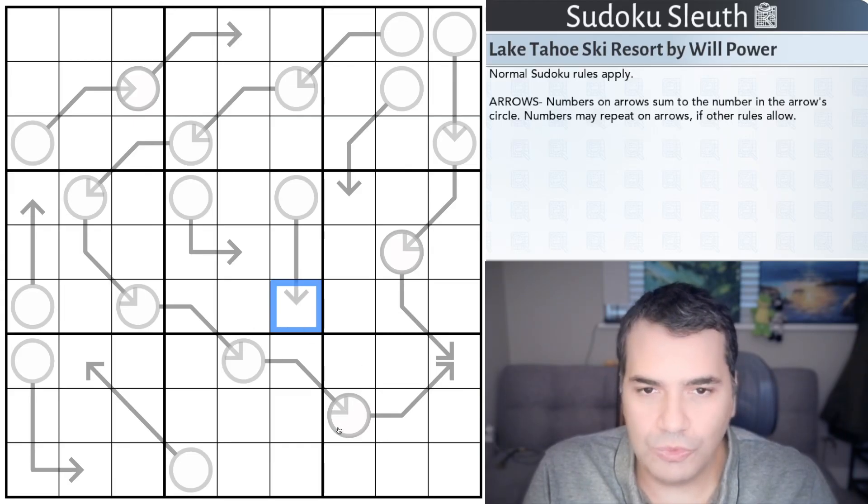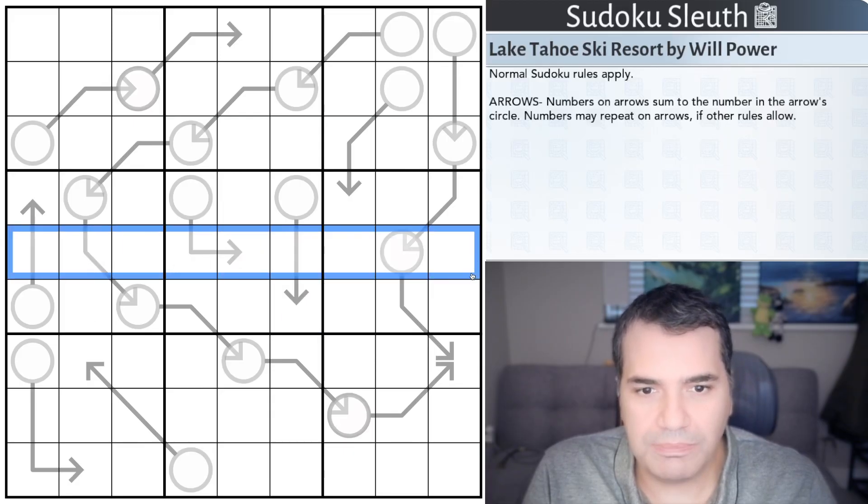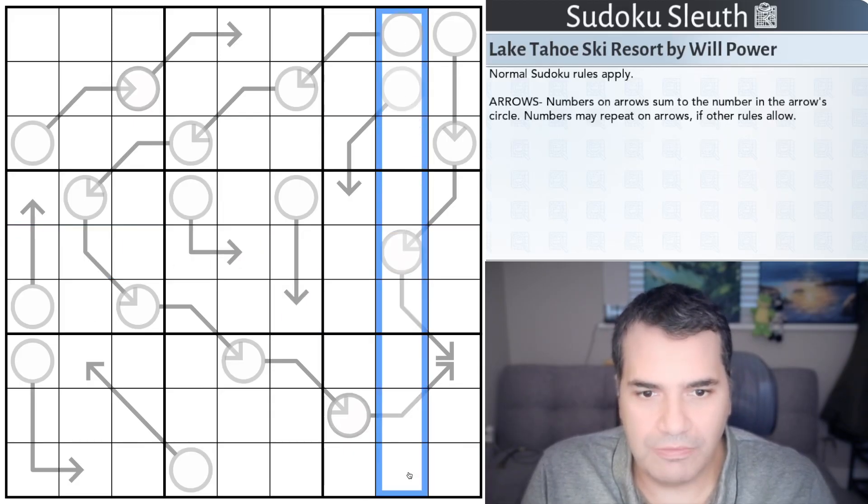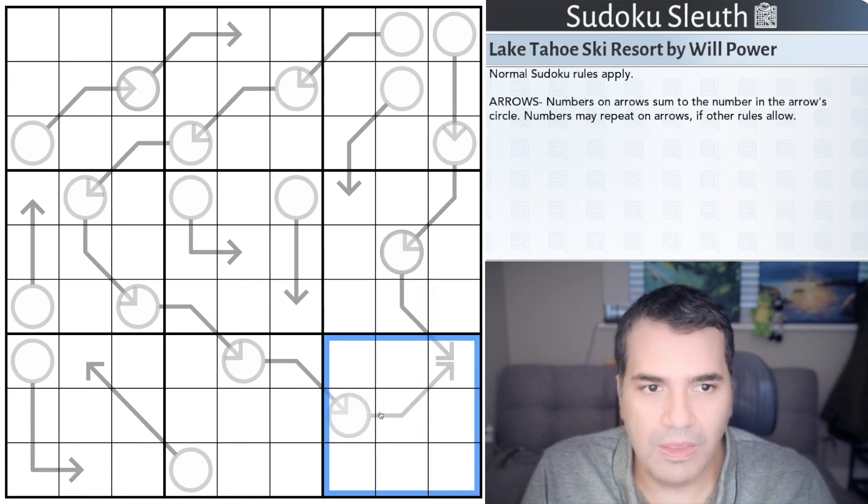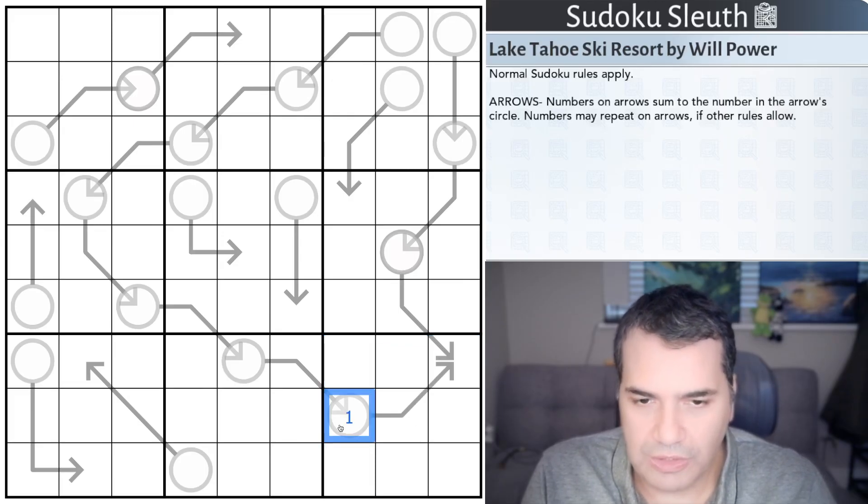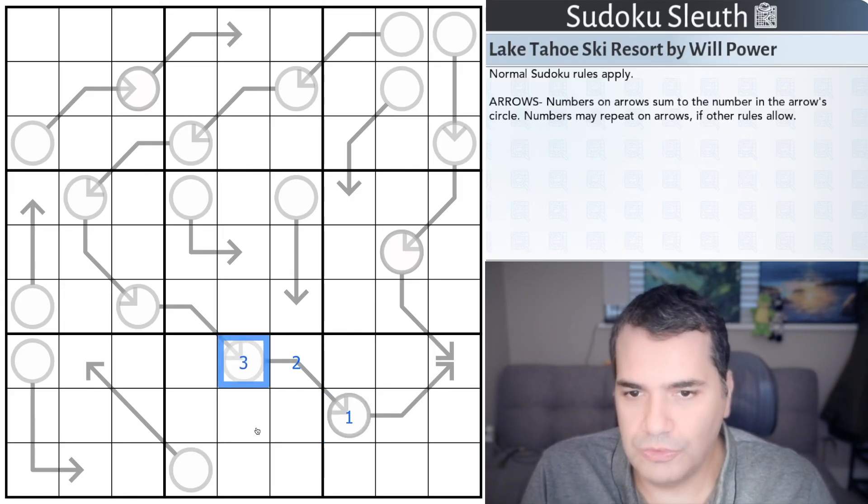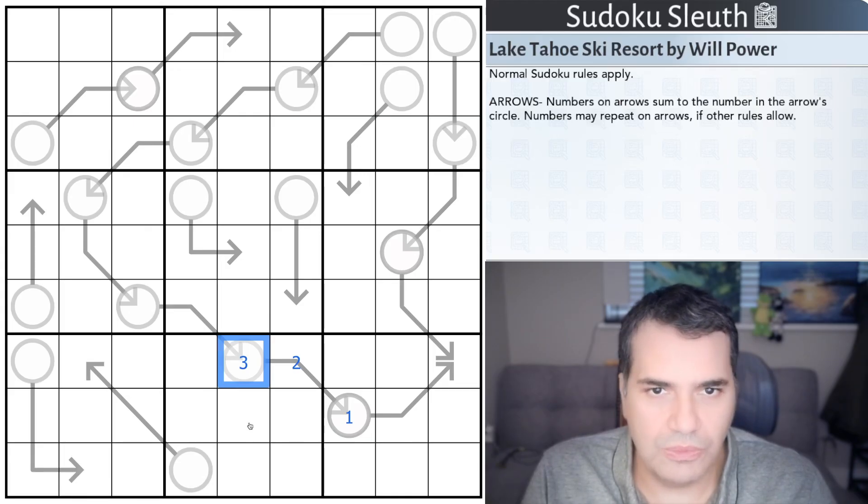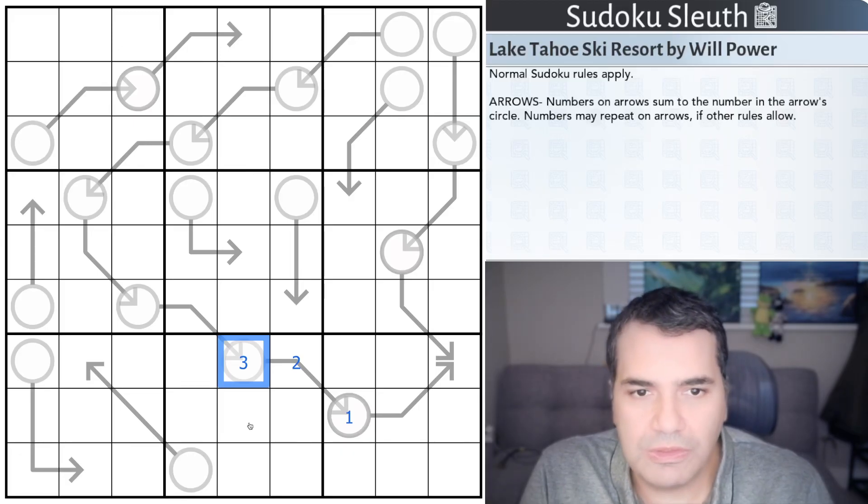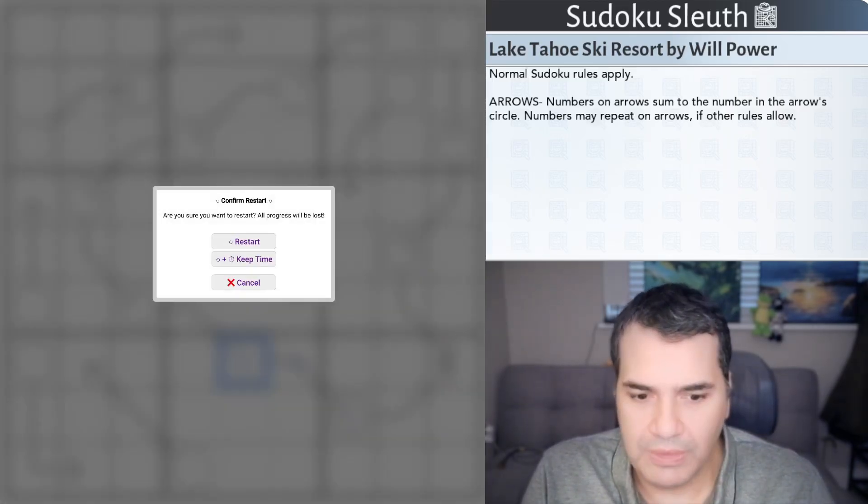Let me bring up this puzzle from Will Power. Only two rules: normal Sudoku rules apply—place digits 1 to 9 once each in every row, column, and 3x3 box. Then arrow sum rules: numbers on arrows sum to the number in the arrow's circle, and numbers may repeat on arrows if other rules allow. For example, if this cell is 1 and this is 2, these add up to 3 on this arrow. Fairly straightforward.